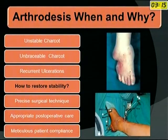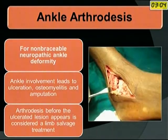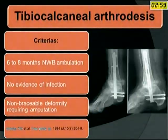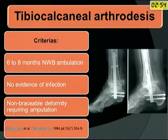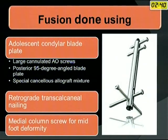When and why arthrodesis? When there is unstable Charcot, unbraceable Charcot, or recurrent ulcerations. To restore stability, precise surgical techniques, appropriate post-operative care, and meticulous patient compliance are required. Ankle arthrodesis is indicated for non-braceable neuropathic ankle deformity. Tibiocalcaneal arthrodesis is emerging as one of the best options, with fusion done using large cannulated AO screws, 95-degree angle blade plate, etc. Retrograde transcalcaneal nailing is being touted as one of the best ways of fusing the ankle joint.